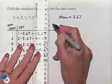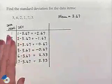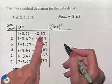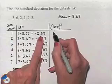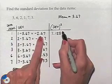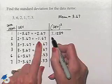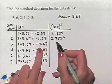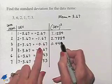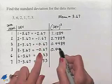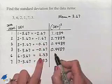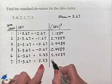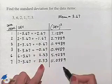In our third column we take each deviation and square it. Squaring negative 2.67 gives 7.1289; squaring negative 1.67 gives 2.7889; squaring negative 0.67 gives 0.4489, and again 0.4489; squaring 2.33 gives 5.4289; and squaring 3.33 gives 11.0889.